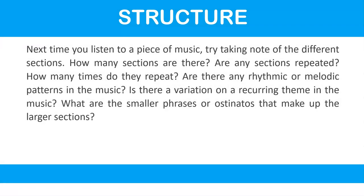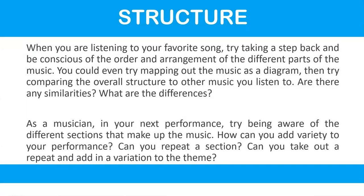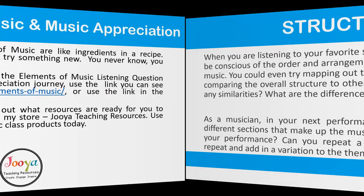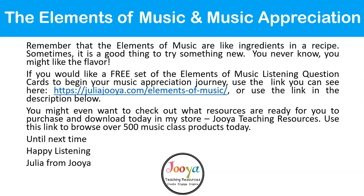Next time you listen to a piece of music, try taking note of the different sections. How many sections are there? Are any sections repeated, and how many times? Are there any rhythmic or melodic patterns? Is there a variation on a recurring theme? What are the smaller phrases or ostinatos that make up the larger sections? When listening to your favourite song, try mapping out the music as a diagram, then compare the overall structure to other music you listen to — are there any similarities or differences? As a musician, try being aware of the different sections in your next performance. Can you add variety, repeat a section, or add a variation to a theme? Remember the elements of music are like ingredients in a recipe — sometimes it's good to try something new. You never know, you might like the flavour.